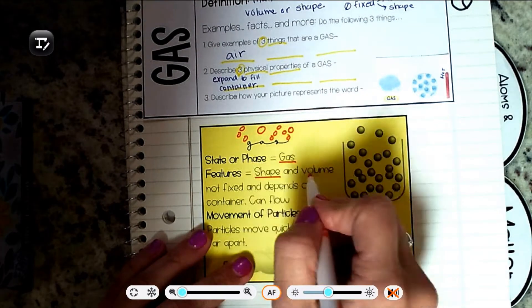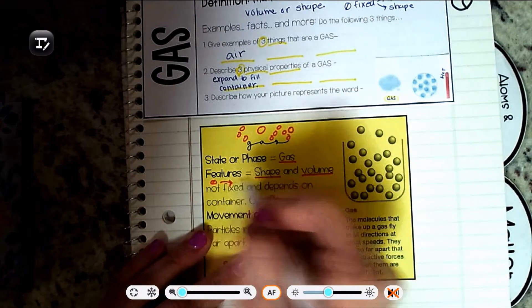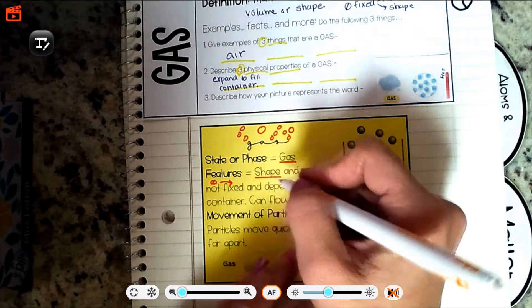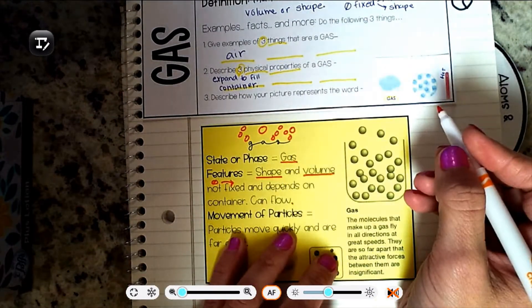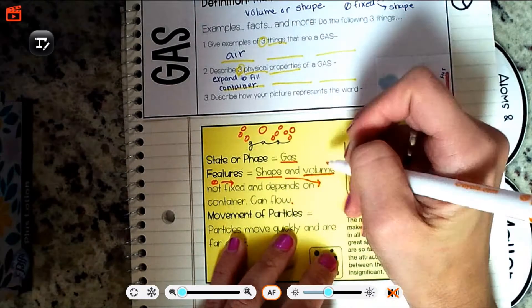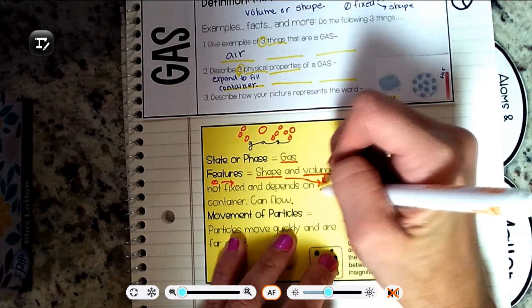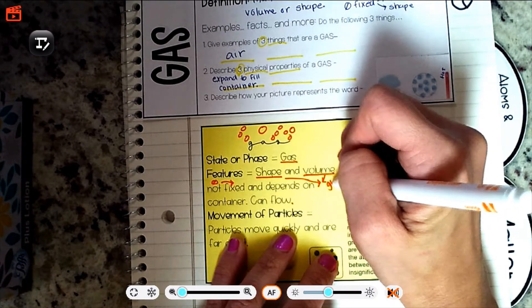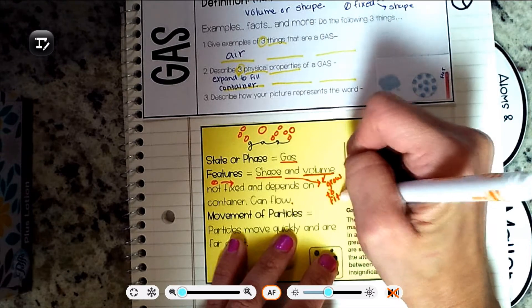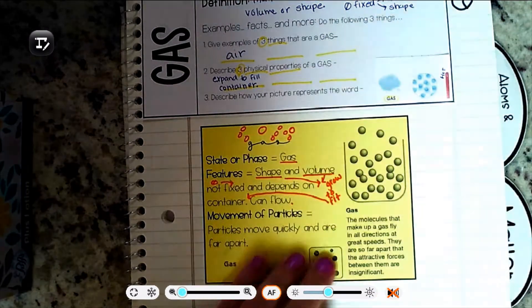Its shape and volume are not fixed and depends on the container. It can also flow. So why does it depend on the container? The shape and the volume, the volume is going to grow to the container. They're both going to grow to fit the container.